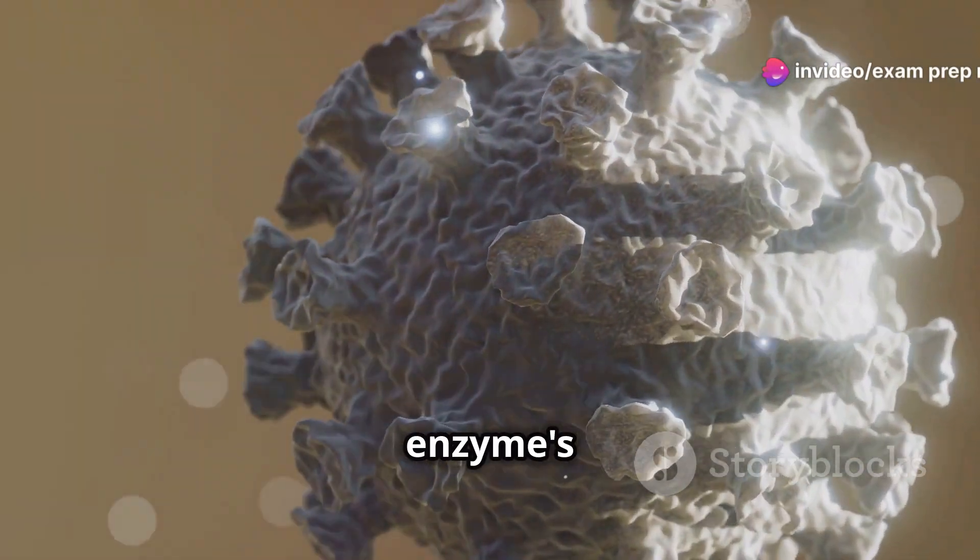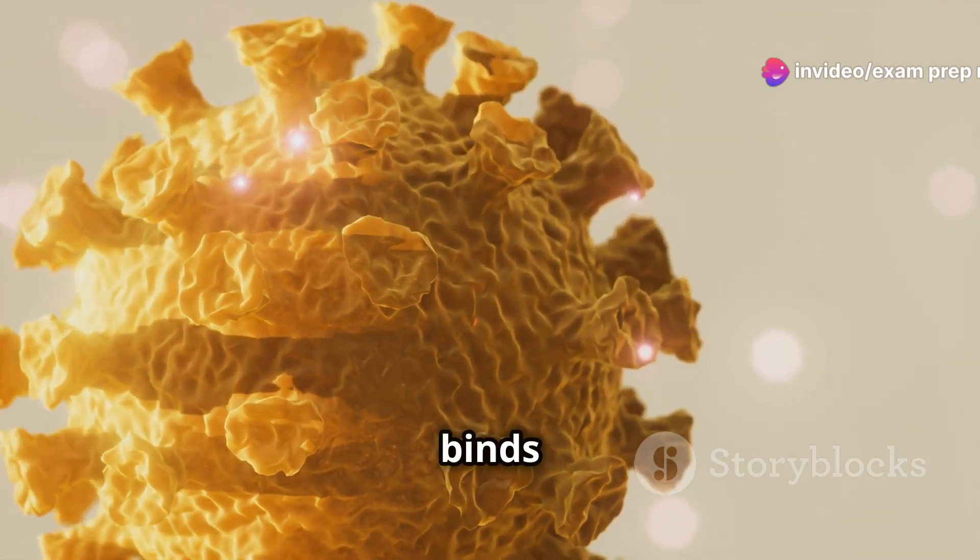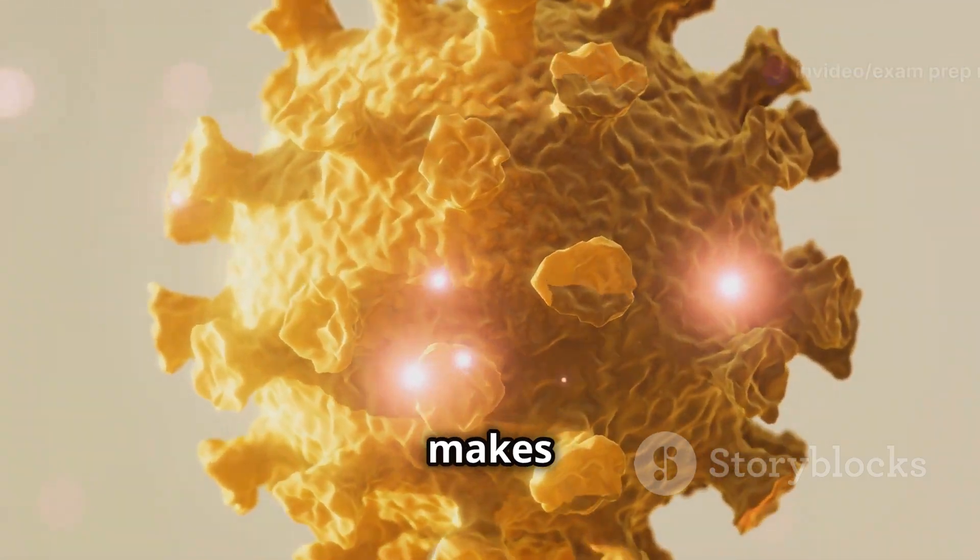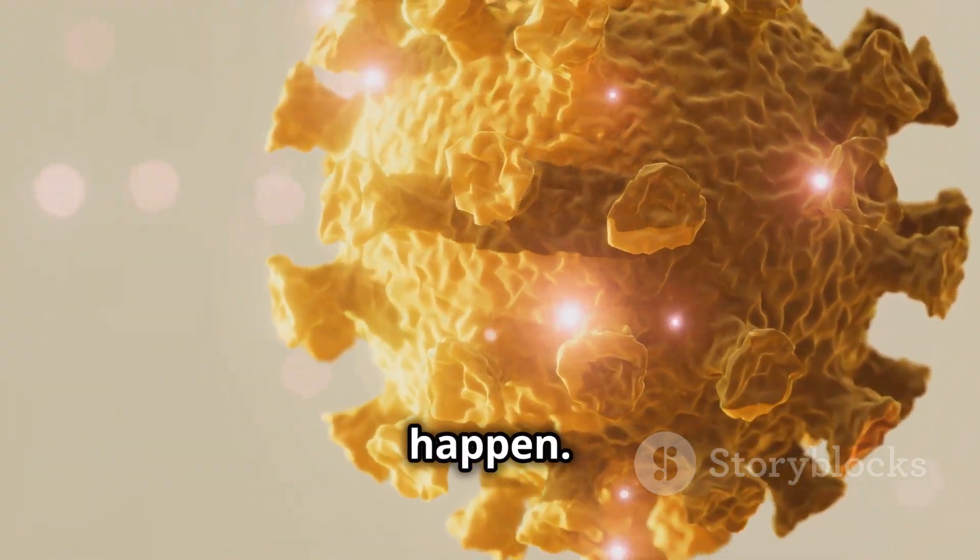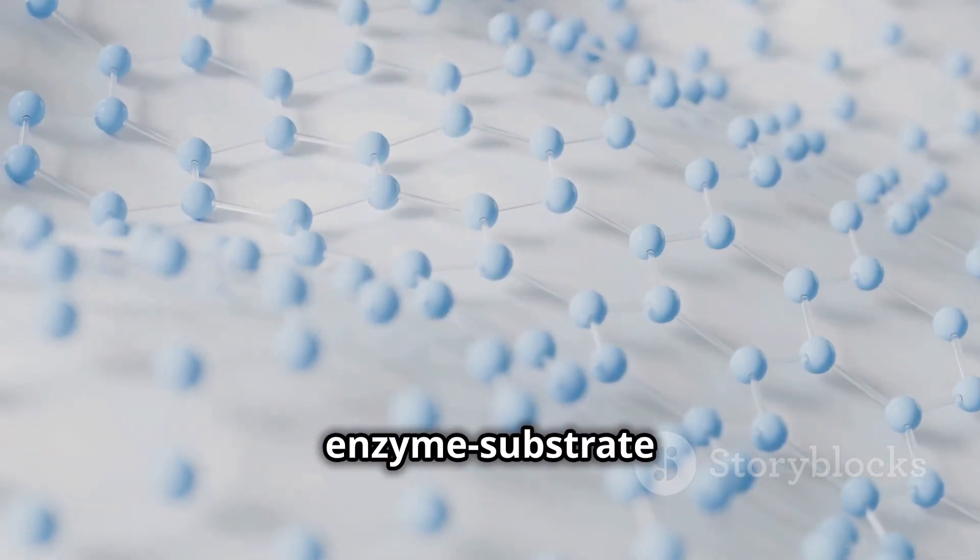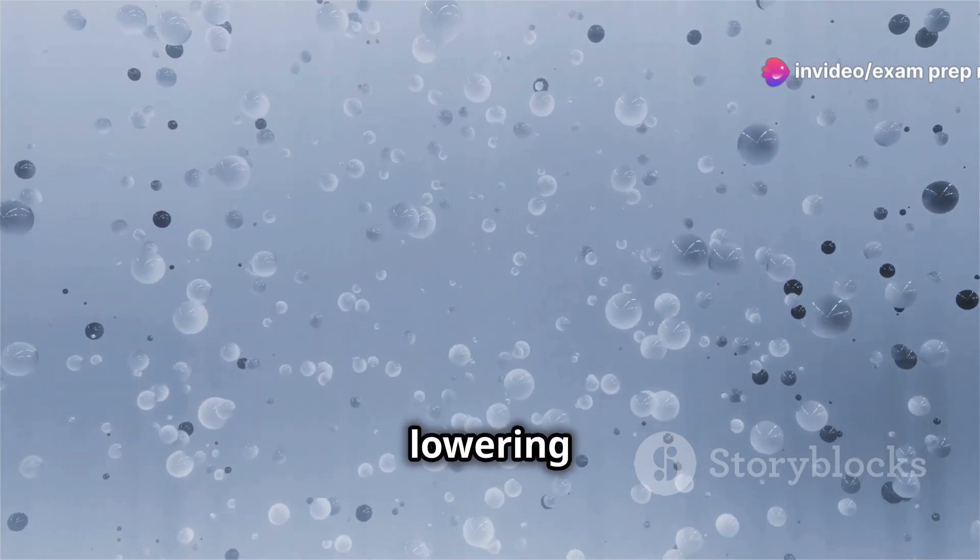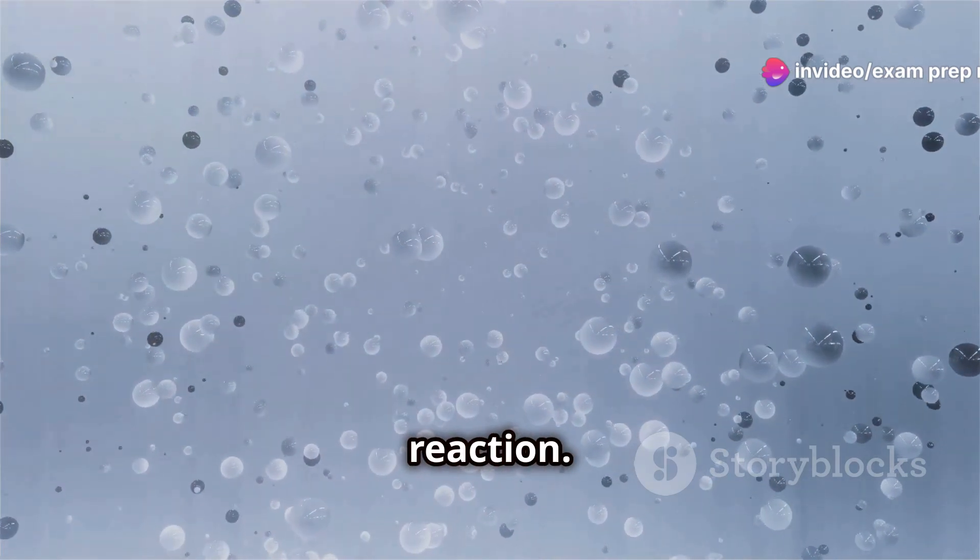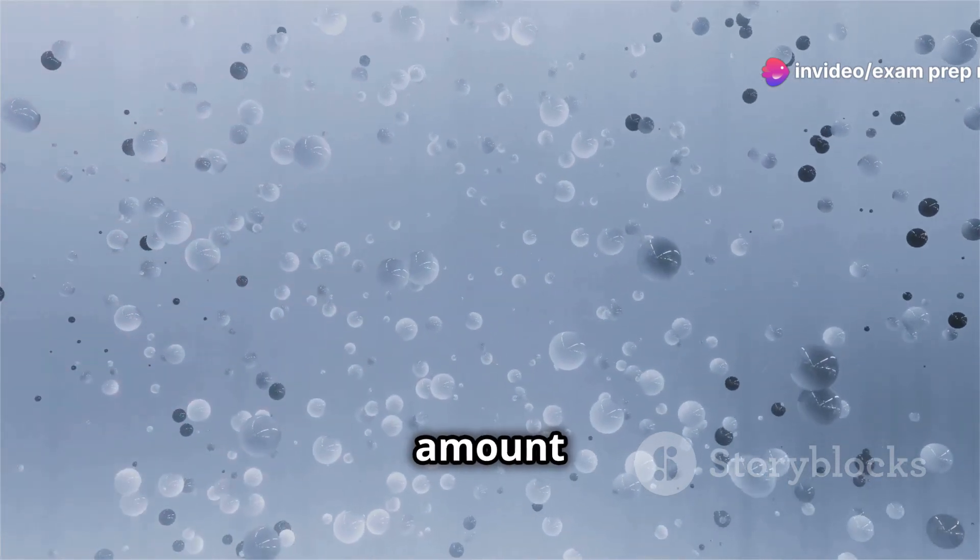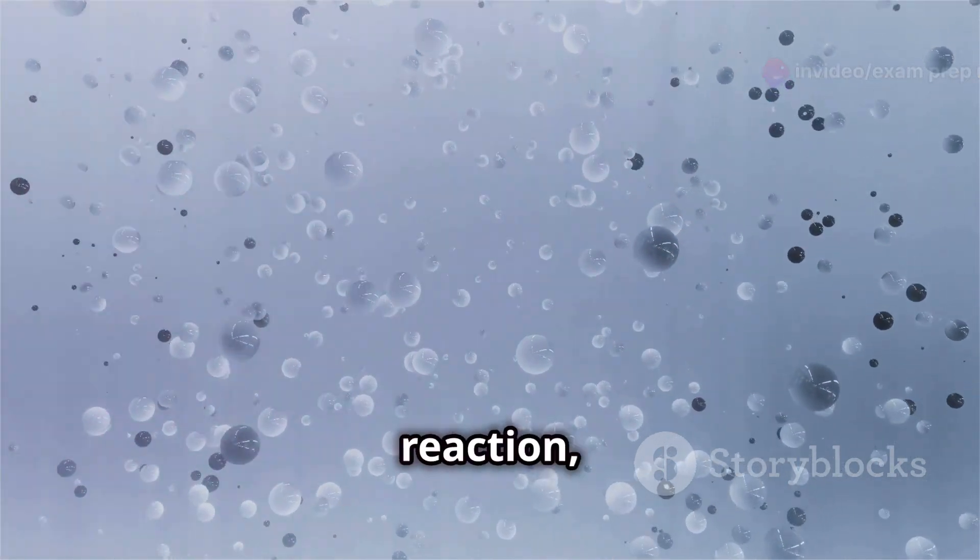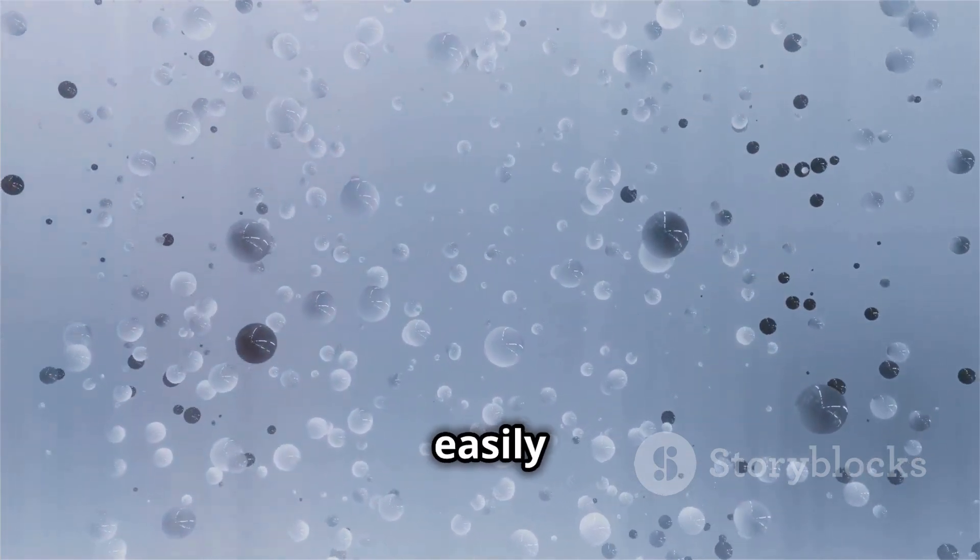The enzyme's active site not only binds the substrate but also orients it in a way that makes the chemical reaction more likely to happen. Once the enzyme-substrate complex is formed, the enzyme gets to work, lowering the activation energy of the reaction. This is like reducing the amount of energy needed to start the reaction, making it happen more easily and quickly.